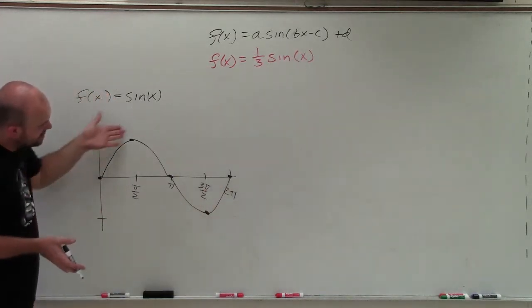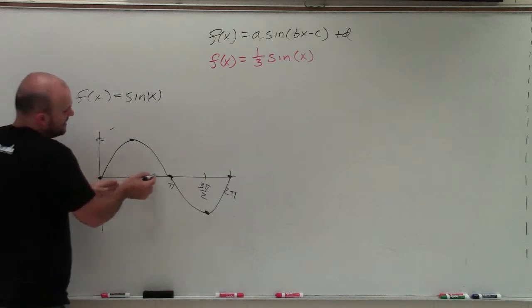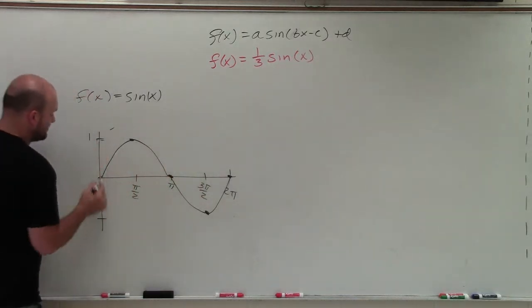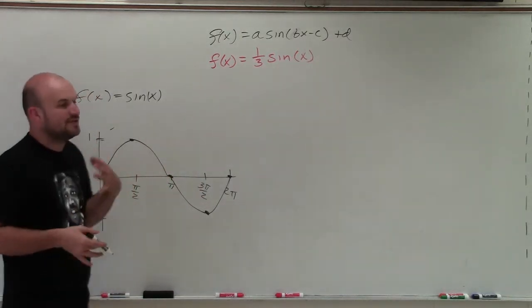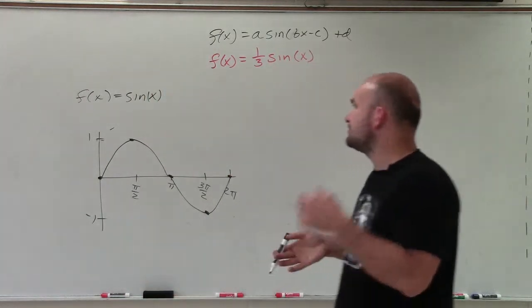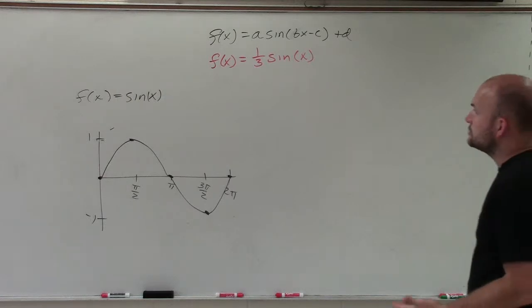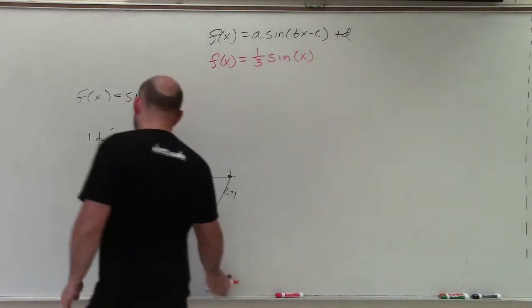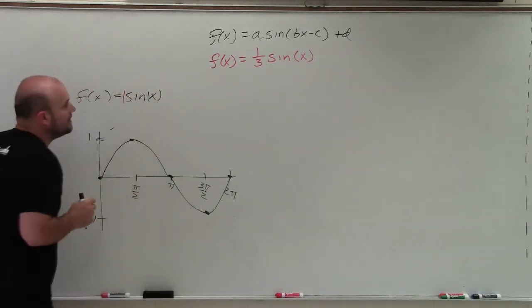So you can see at each important part is your x scale. Now it goes up to 1 and negative 1. That's what we call the amplitude, the half distance from the minimum to the maximum. So you can see that, really, the number in front of here is 1, right? Well now, my number here is 1/3.